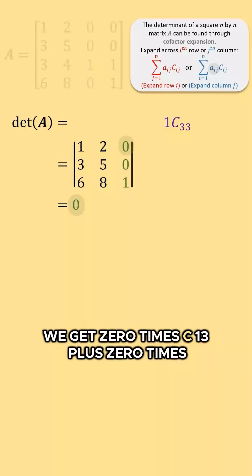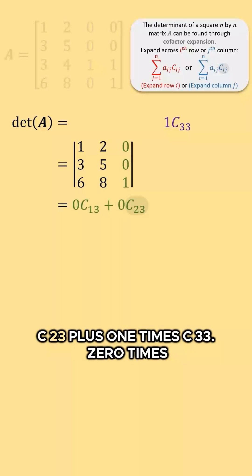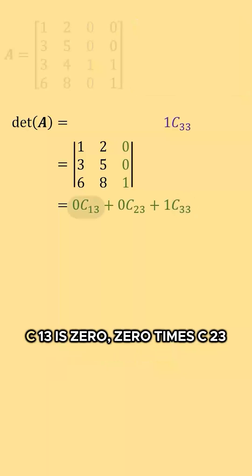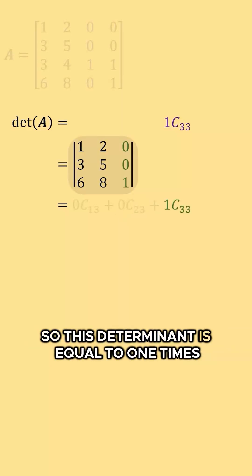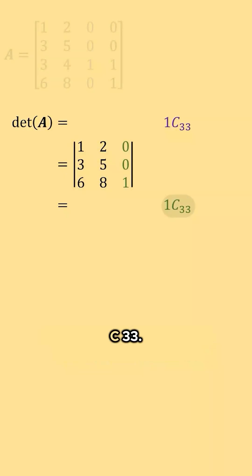we get 0 times C13 plus 0 times C23 plus 1 times C33. 0 times C13 is 0, 0 times C23 is 0. So this determinant is equal to 1 times C33.